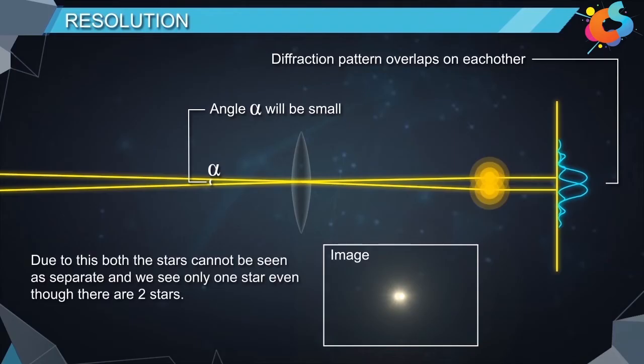Due to this, both the stars cannot be seen as separate and we see only one star even though there are two stars.